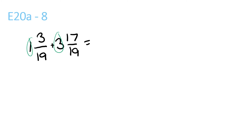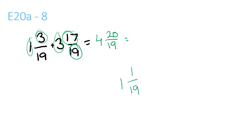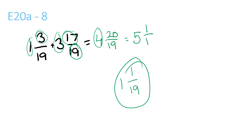1 plus 3 is 4. 3 plus 17 is 20 over 19, because the bottom stays the same, which can be reduced. 19 goes into 20 once with a remainder of 1 over 19. So you get that and add it to 4, giving 5 and 1 over 19.